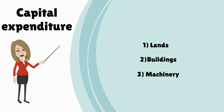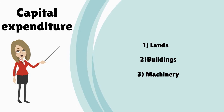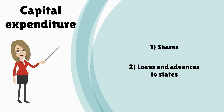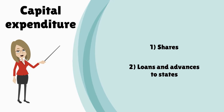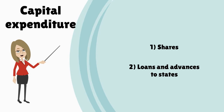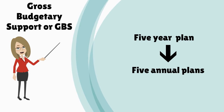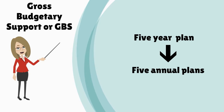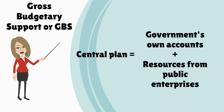Capital expenditure is the money spent on acquisition of assets such as land, buildings, and machinery. Besides investments in shares, loans and advances that the center grants to states, union territories, and government-owned companies also constitute capital expenditure. The government's five-year plan is broken down into five annual plans that are fleshed out in the budget.